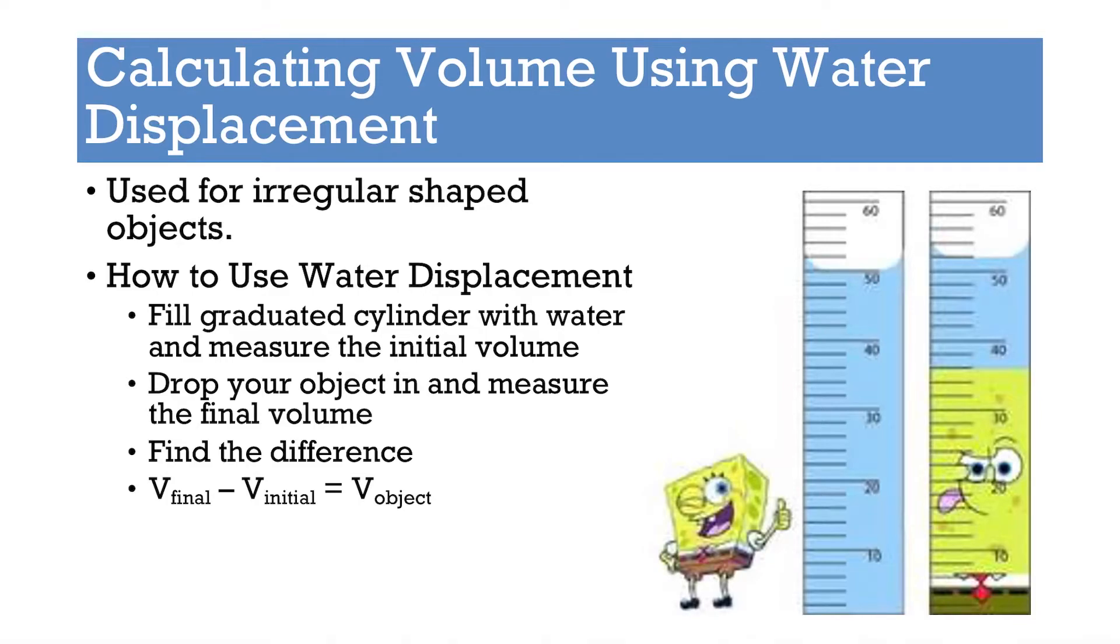Another very common way to calculate volume is using water displacement, and this is used for these irregular or weird-shaped objects. If we wanted to calculate the volume of SpongeBob, there is no volume formula for him, so we can still do it. What you do is you fill a graduated cylinder with an amount of water. Right now we're at 50 mL of water, so that will be our initial volume, 50 mL. Now you put SpongeBob into here, and this is where it is now. So you want to look at how the water changed.